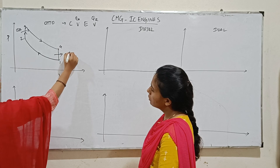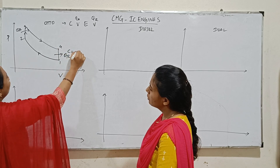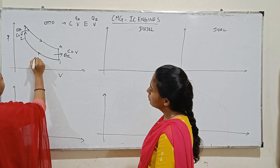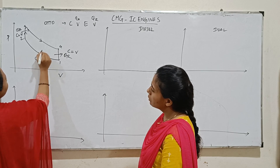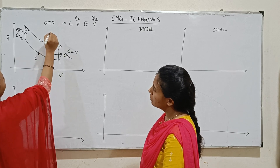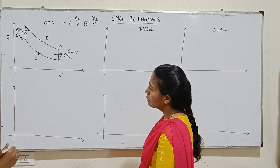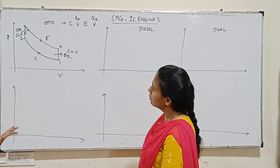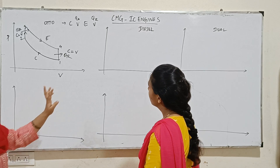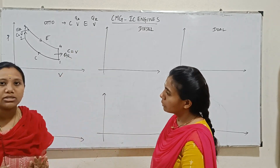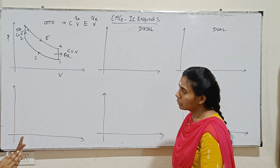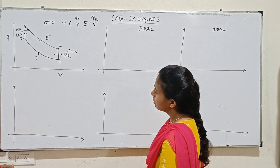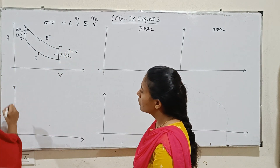So in the Otto cycle, heat addition and heat rejection are both at constant volume, and compression and expansion are isentropic. The Otto cycle is also called constant volume cycle. Look at: compression and expansion are isentropic. That brings us to the TS diagram.